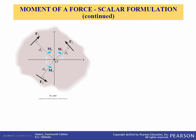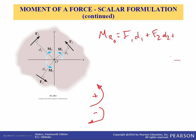For two-dimensional problems where all the forces lie within the xy plane, the resultant moment M sub R about point O can be determined by finding the algebraic sum of the moments caused by all the forces in the system. As a convention, we will generally consider positive moments in the counterclockwise direction and negative moments in the clockwise direction, so the directional sense of each moment can be represented by a plus or minus sign. The resultant moment is F1·D1 + F2·D2 + F3·D3.